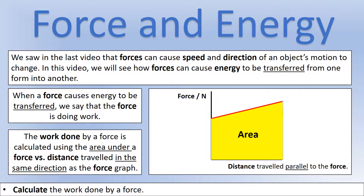Previously we saw that forces can be used to cause an object's speed or direction to change. In this video we're going to look at how forces can cause energy to be transferred from one form into another — for example from GPE to kinetic energy. When a force causes energy to be transferred, we say that force is doing work. Generally, the work done by a force is calculated using the area under a force versus distance graph.